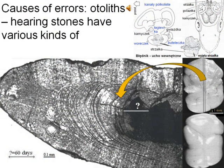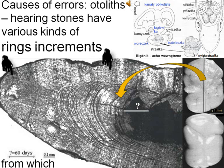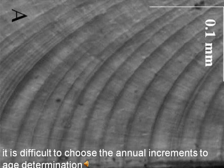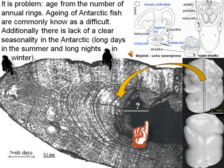Causes of errors. Otoliths — hearing stones — have various kinds of ring increments, from which it is difficult to choose the annual increments for age determination. It is a problem to age fish from the number of annual rings. Aging of Antarctic fish is commonly known as difficult. Additionally, there is a lack of clear seasonality in the Antarctic, with long days in the summer and long nights in the winter.